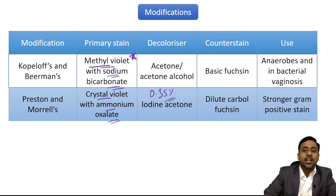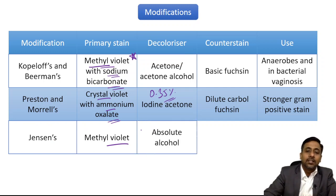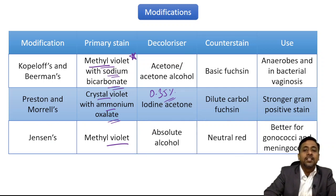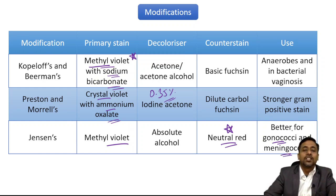Third is Jensen's modification: primary stain is methyl violet, decolorizer is absolute alcohol, and counter stain is neutral red. It is used for gonococcus and meningococcus — as mentioned earlier, neutral red as counter stain is useful for gonococcus and meningococcus. Remember this.